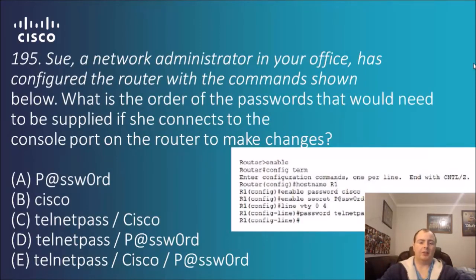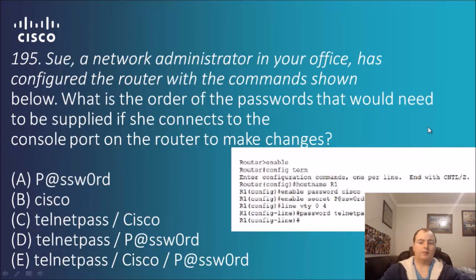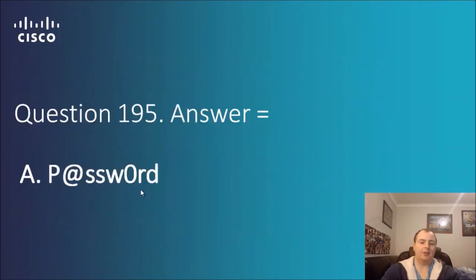Question 195: a network administrator has configured the router with the commands shown. What is the order of the passwords that would need to be supplied when connecting to the console port to make changes? The configuration includes: enable password Cisco, enable secret password, line VTY 0-4 password, and Telnet pass. The enable secret takes precedence over the enable password, and there's no further configuration for the console password, so just 'password' will be the order. The answer is A.